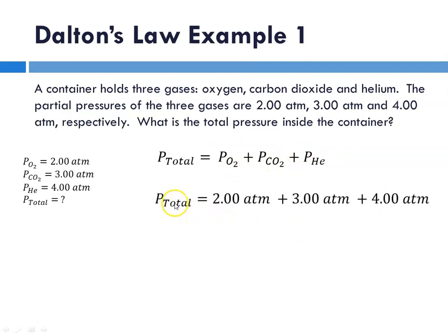So now let's plug in the numbers. The p total is going to be our 2 plus our 3 plus our 4 atmospheres, so our p total is equal to 9 ATMs.